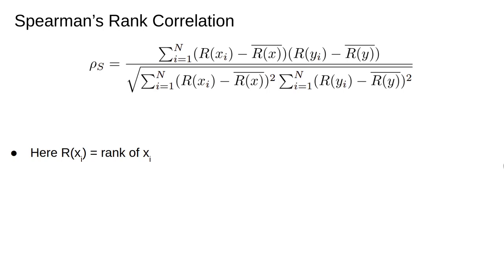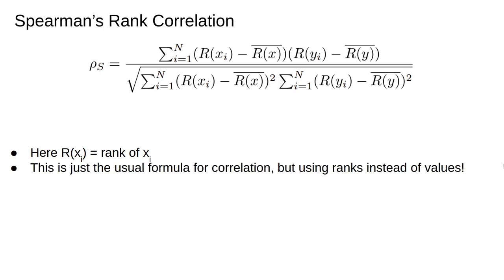Now we can calculate a correlation coefficient using the ranks. Here I'm using the notation that R of xi means the rank of xi, and the bar as before denotes the average. Sum up all the values and divide by the total number.